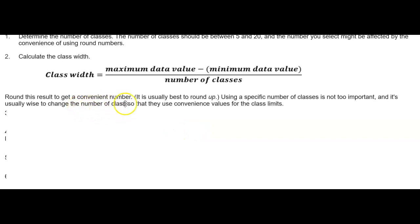this result to a convenient number. It is usually best to round up. Using a specific number of classes is not too important, and it's usually wise to change the number of classes so that they use convenience values for